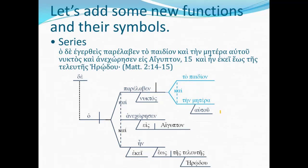These two nouns form a series of direct objects completing the verb parelaben. So after parelaben comes the vertical line separating the verb from its object, and then the object slot divides into two branches of a series — the child on top, the coordinating conjunction and in the middle, and then his mother on the bottom branch. This is the standard way of diagramming series of anything.